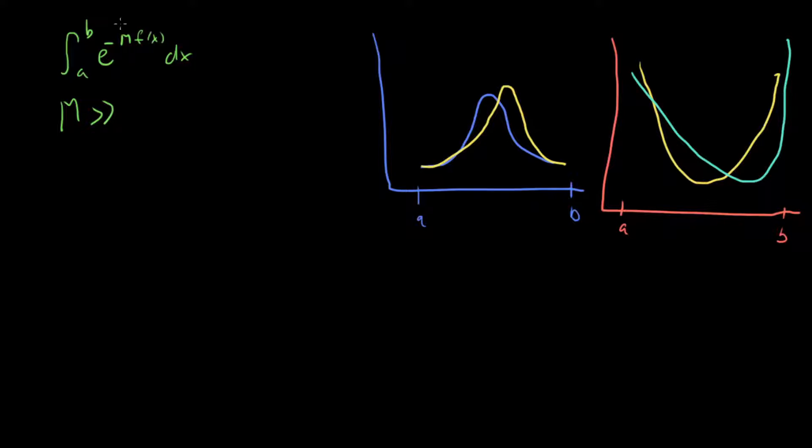That means if we have some function that looks something kind of like this, then this integral we can treat as a Gaussian integral to a good approximation. So how are we going to do that? Well, the first thing we're going to do is a Taylor series of f(x). If we Taylor expand f(x), that's equal to f(x₀) + f'(x₀)(x - x₀) + f''(x₀)/2(x - x₀)²...